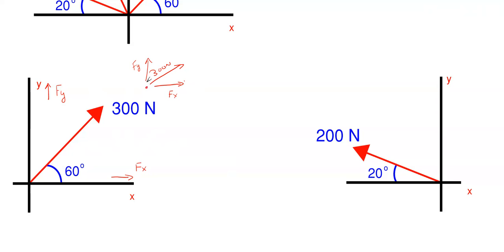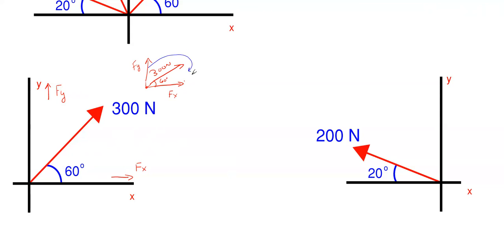We have FY and FX components that originate from the same starting point as the 300, which is the origin of the coordinate system, with 60 degrees off of the X direction. FX goes directly along X, FY goes along Y. We can copy and paste FY to form a right triangle without changing its orientation or magnitude. The angle between X and Y is still 90 degrees, so we can utilize this angle given with the 300 Newtons and find FX and FY using SOH-CAH-TOA — sine and cosine.